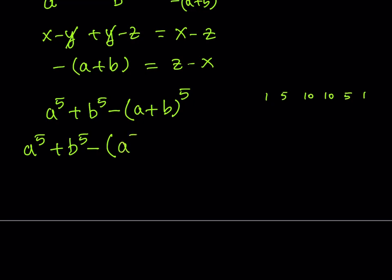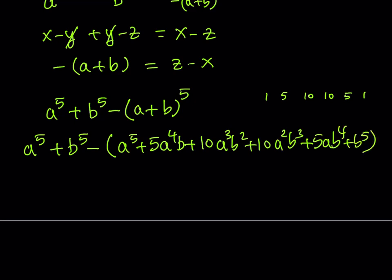So I should be getting a to the fifth plus 5 a to the fourth b plus 10 a cubed b squared plus 10 a squared b cubed. You see the symmetry here? Plus 5 a b to the fourth, and then finally we'll get b to the fifth.